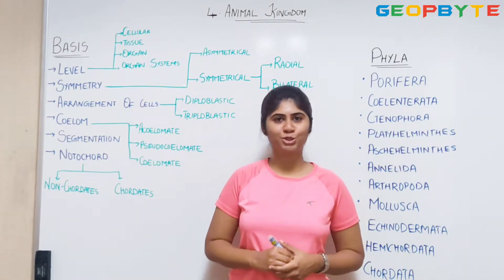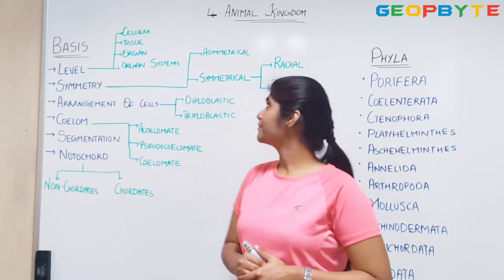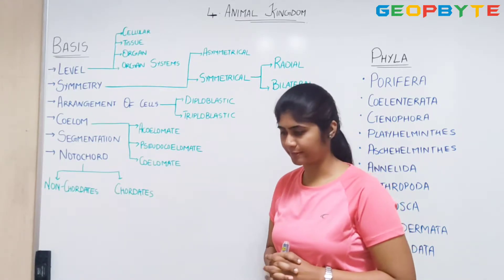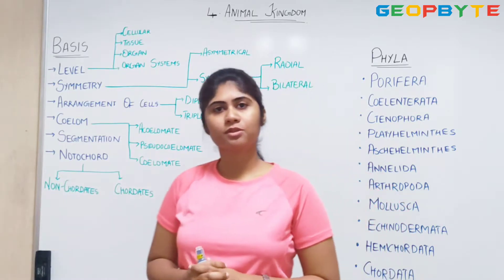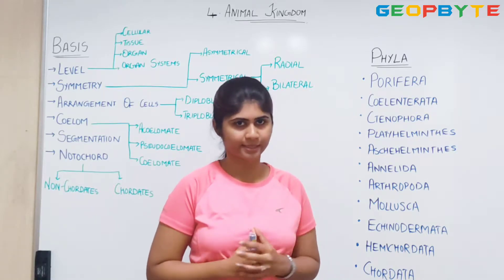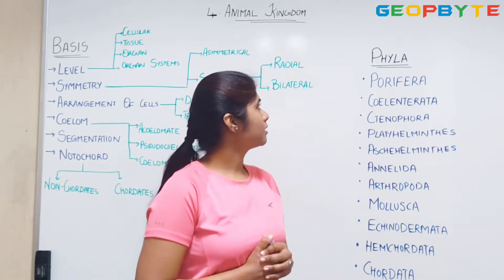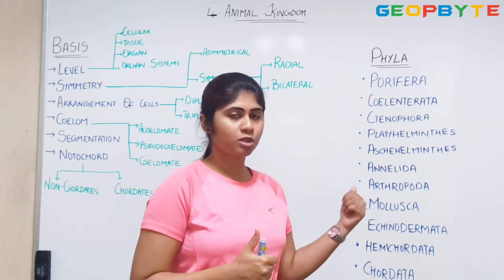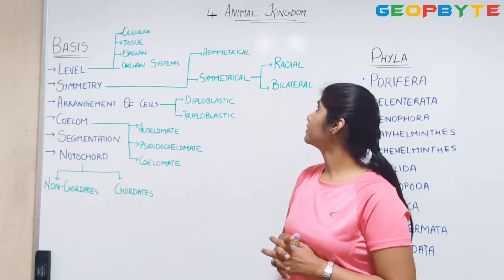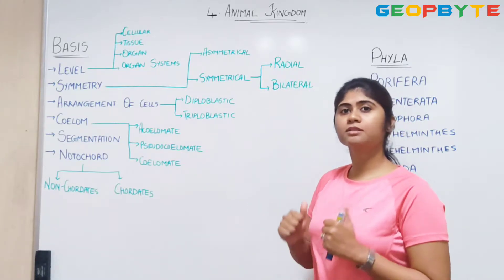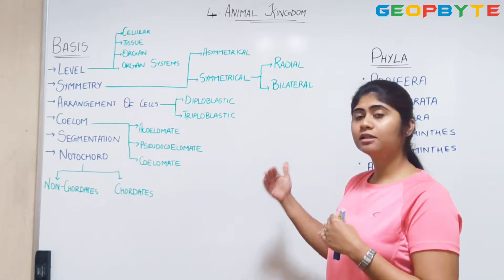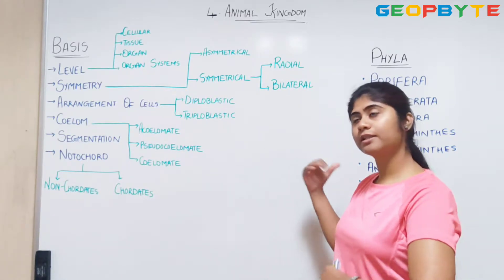Hello all, welcome to Geobyte. In today's video, I am going to start discussion about the fourth chapter, that is Animal Kingdom. In the previous chapter, we have seen a detailed classification of Plant Kingdom. We have five kingdom classification, and in that we have Animal Kingdom. We have discussed Plant Kingdom and now we move on to Animal Kingdom. We will see a detailed classification of the Animal Kingdom.